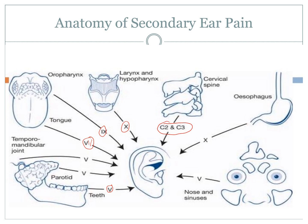Cranial nerve 5, the trigeminal, is broken up into three branches: the ophthalmic, maxillary, and mandibular. Referred pain to the ear can be a problem with the face, the sinus, the palate, the teeth, and even the temporomandibular joint, which is quite a common secondary site. Looking at the facial nerve (CN7), this can carry referred pain from the anterior two-thirds of the tongue and the sublingual and submandibular salivary glands — so salivary gland inflammation or infection can actually cause referred ear pain.